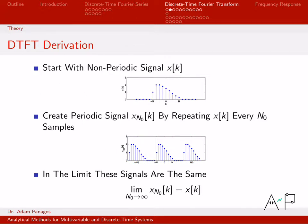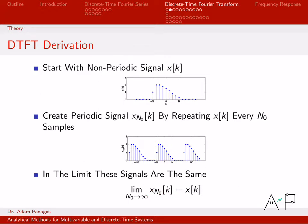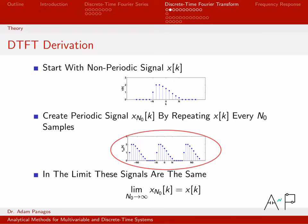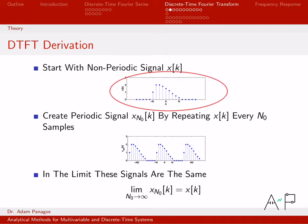Once we've written down that frequency domain representation, we can take the limit as n-naught gets big. As n-naught gets big, the gaps in between get very large, and in the limit, this periodic signal will eventually equal the signal we started with. So the strategy is: write down the frequency domain representation for this periodic signal since we know how to, then let n-naught get large. Whatever comes out, we call the frequency domain representation of the non-periodic signal x of k.